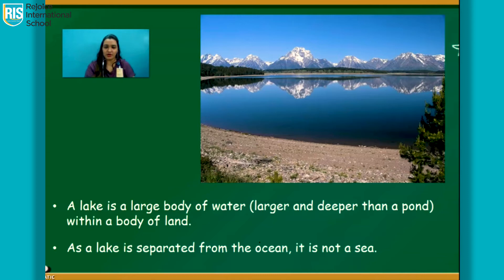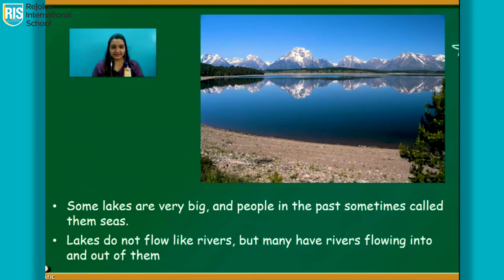As a lake is separated from the ocean, it is not a sea. Some lakes are very big and people in the past sometimes called them seas. Lakes do not flow like rivers, but many have rivers flowing into and out of them.